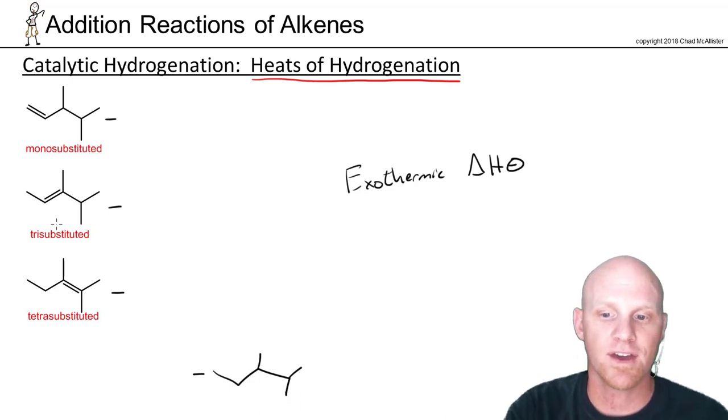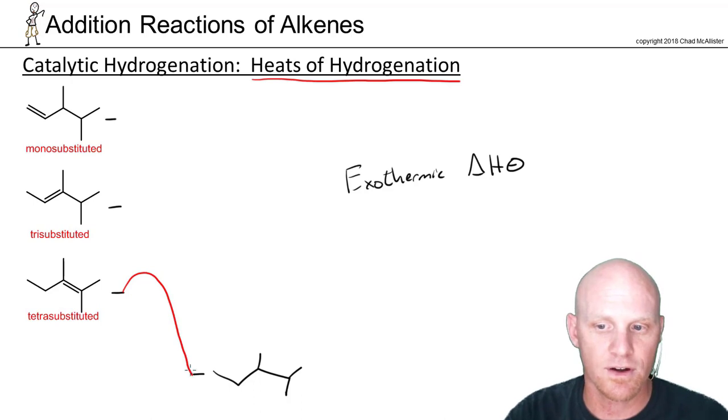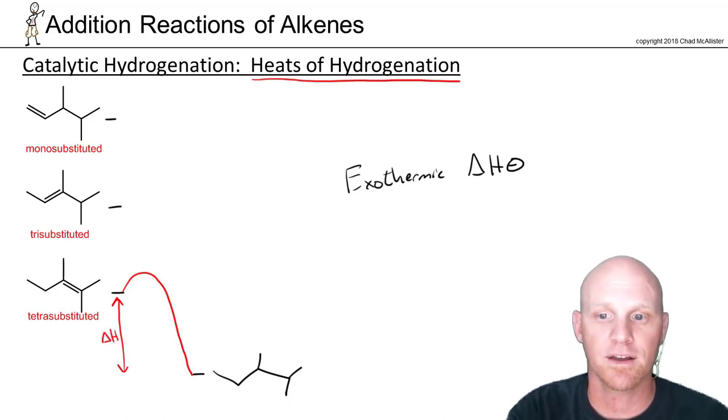And in this case, if we kind of look at the energy profiles for each one of these reactions, we can kind of see, so here's one and definitely going to be a big fat negative delta H. This difference right here would be our delta H. And because we're going downhill overall, it's definitely going to be negative.